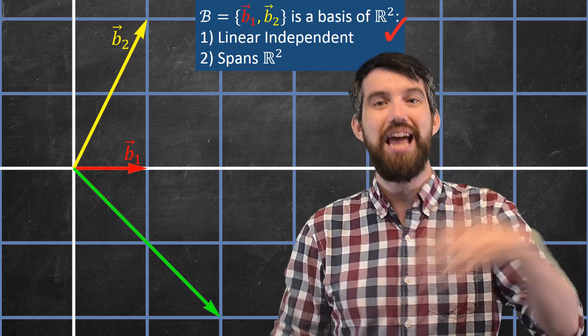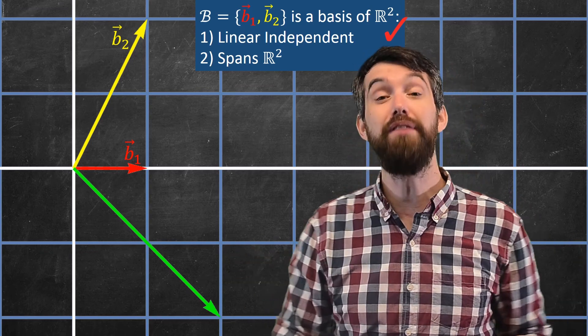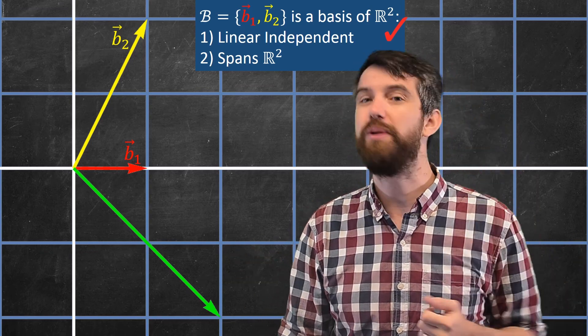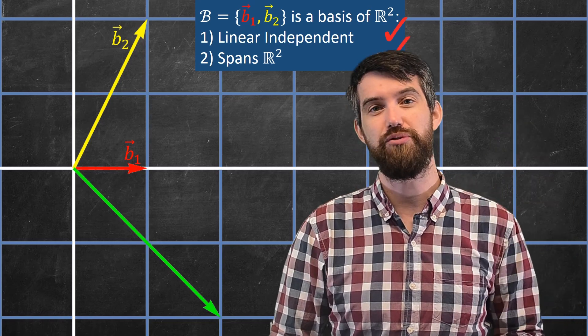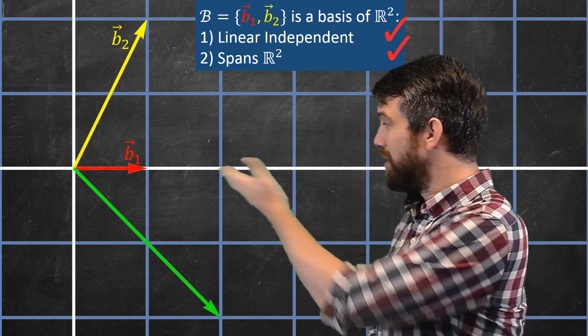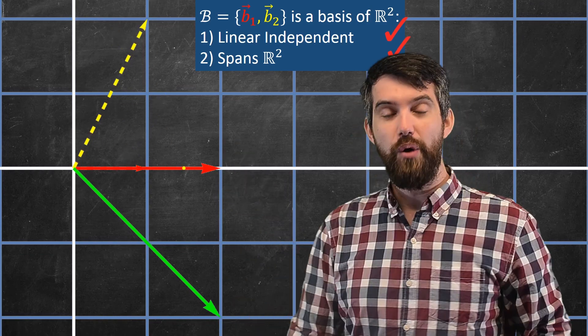And then, for span, I want to show that any vector, like perhaps this green vector that I have, that it can also be written in terms of these two basis vectors, and indeed that is also going to be true. For instance, we can go and take these particular ones, and let's go and see how it can be written.